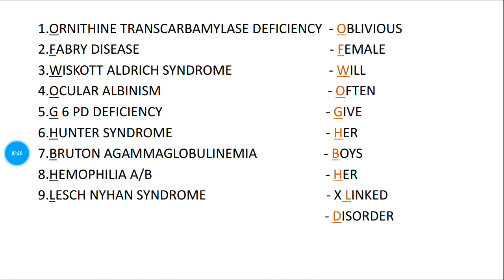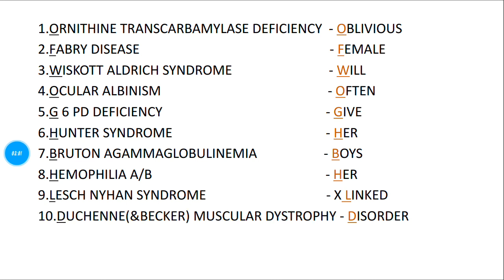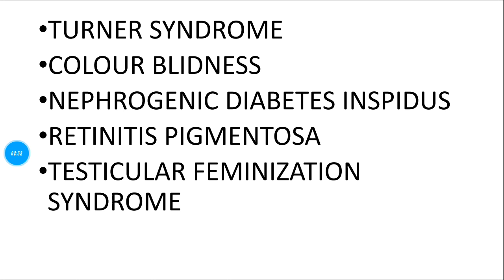H stands for Hunter's syndrome. B stands for Bruton's agammaglobulinemia. H stands for Hemophilia A and B. L stands for Lesch-Nyhan syndrome. D stands for Duchenne and Becker muscular dystrophy. So the full mnemonic covers: OTC deficiency, Fabry disease, Wiskott-Aldrich syndrome, Ocular albinism, G6PD deficiency, Hunter's syndrome, Bruton's agammaglobulinemia, Hemophilia A and B, Lesch-Nyhan syndrome, and Duchenne and Becker muscular dystrophy.